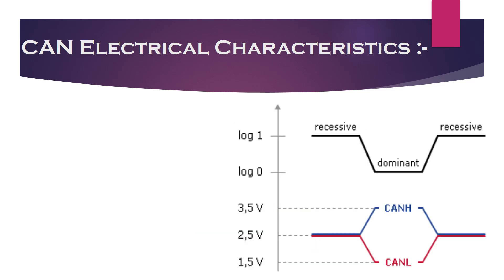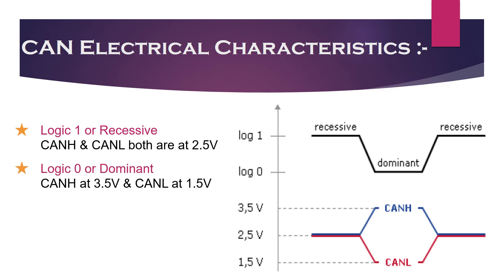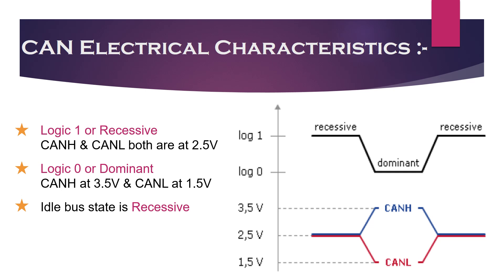Let's recap so there is no confusion. Logic 1 is called the recessive state — to transmit 1, CAN high and CAN low lines should both be applied with 2.5V. Logic 0 is called the dominant state — to transmit 0, CAN high must be pulled up to 3.5V and CAN low should be pulled down to 1.5V. The ideal state of the bus is recessive, and if one node makes the bus state dominant, it cannot be driven back to recessive by any other node.